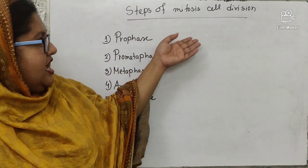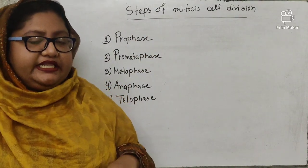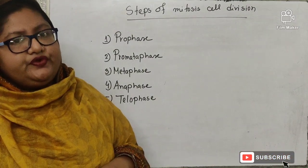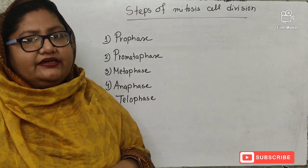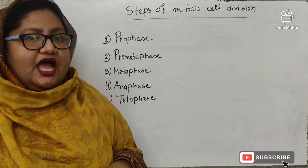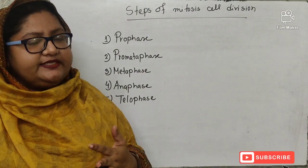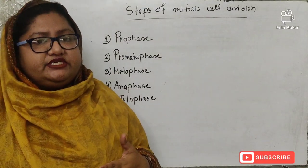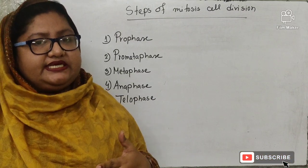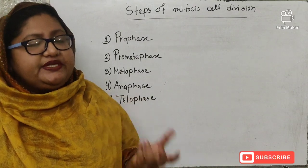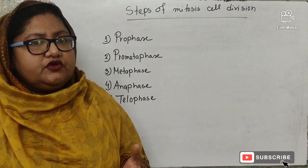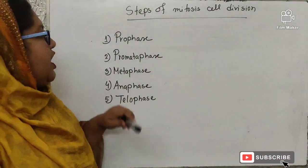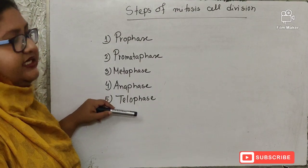Steps of mitosis cell division: mitosis cell division is a continuous process in which cariokinesis is followed by cytokinesis. Cariokinesis is the division of the nucleus, and cytokinesis is the division of the cytoplasm. Before cell division starts, the cell prepares itself — this stage is known as interphase. The five steps of mitosis cell division are: prophase, prometaphase, metaphase, anaphase, and telophase.